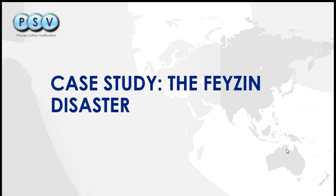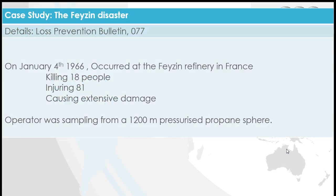Today we're going to be looking at a case study — the Feyzin disaster. This disaster happened in 1966, so it's almost a 50-year-old event and it's a bit of a game changer. The reason we're looking at it is this is the type of event that has changed legislation — a significant number of people were injured or killed: 18 people were killed and a further 81 injured, and it caused extensive damage.